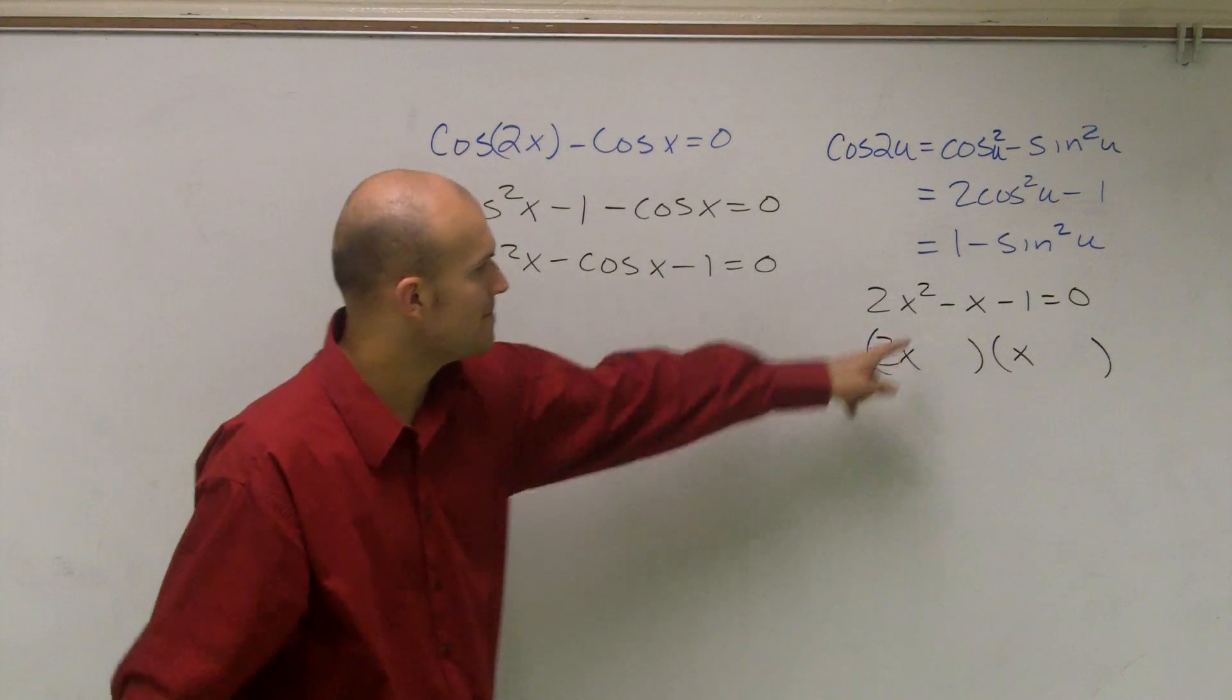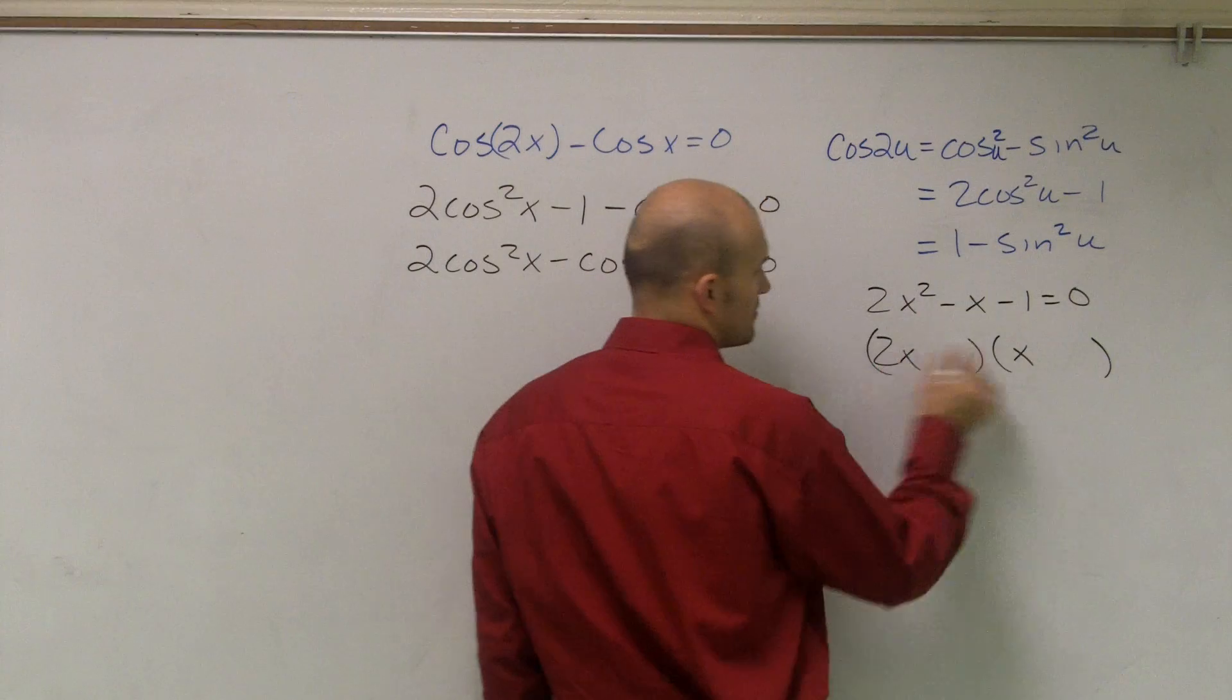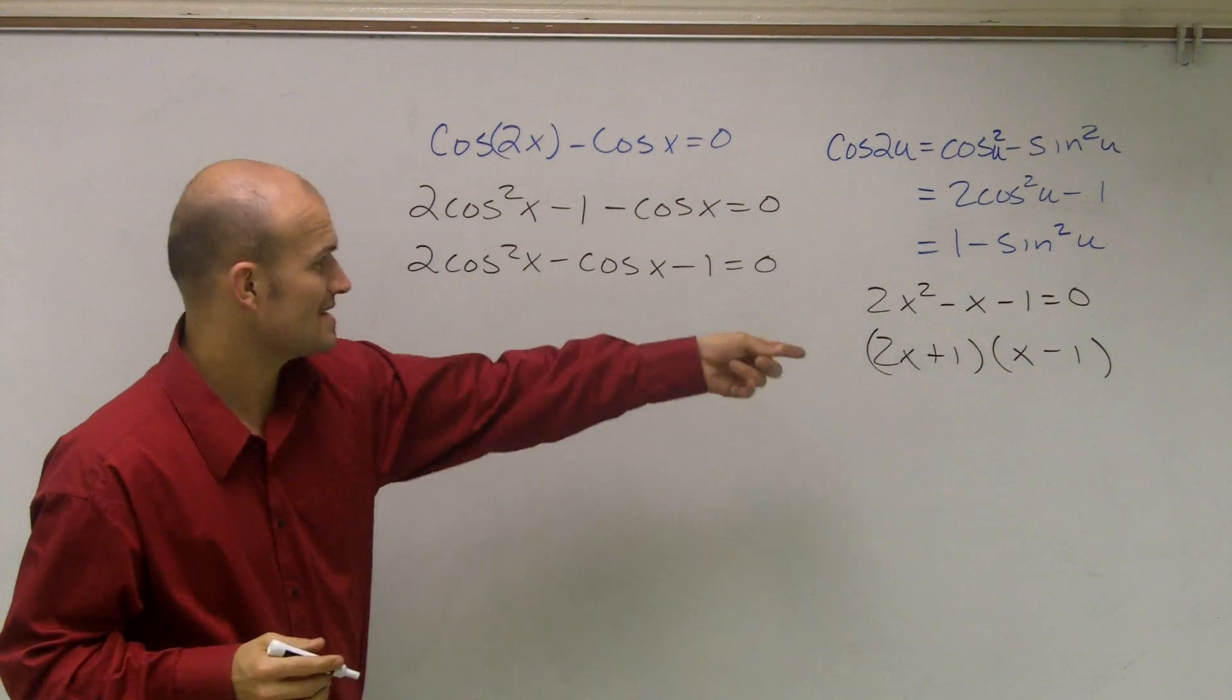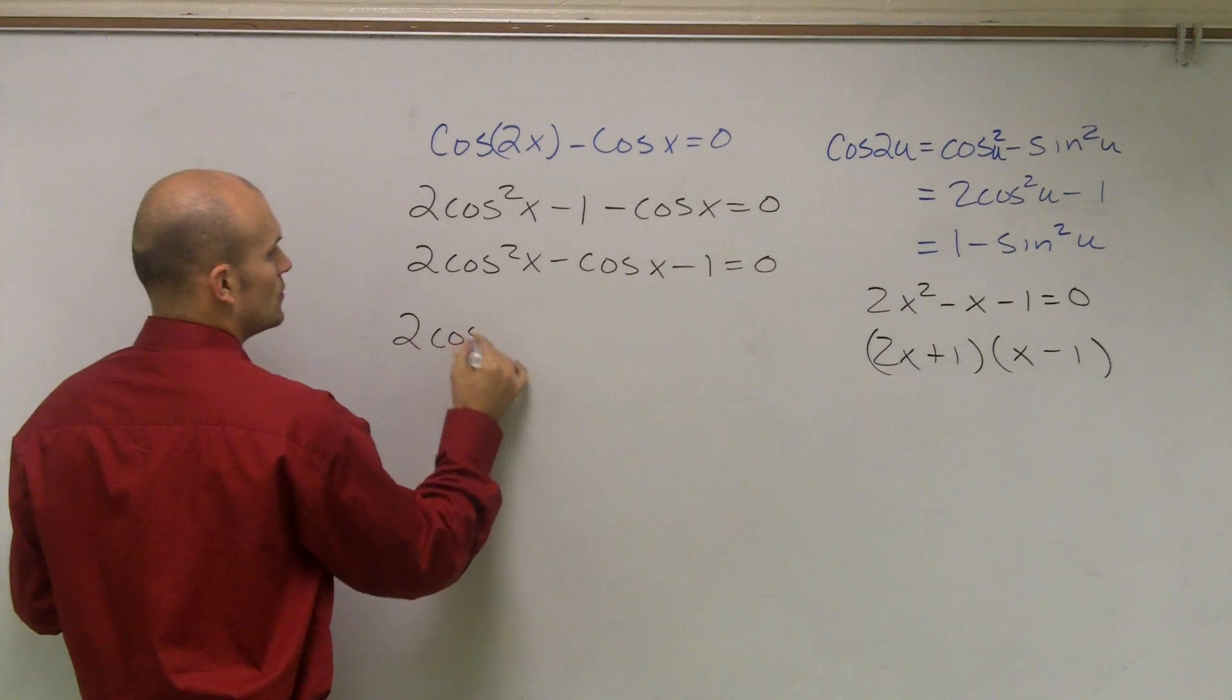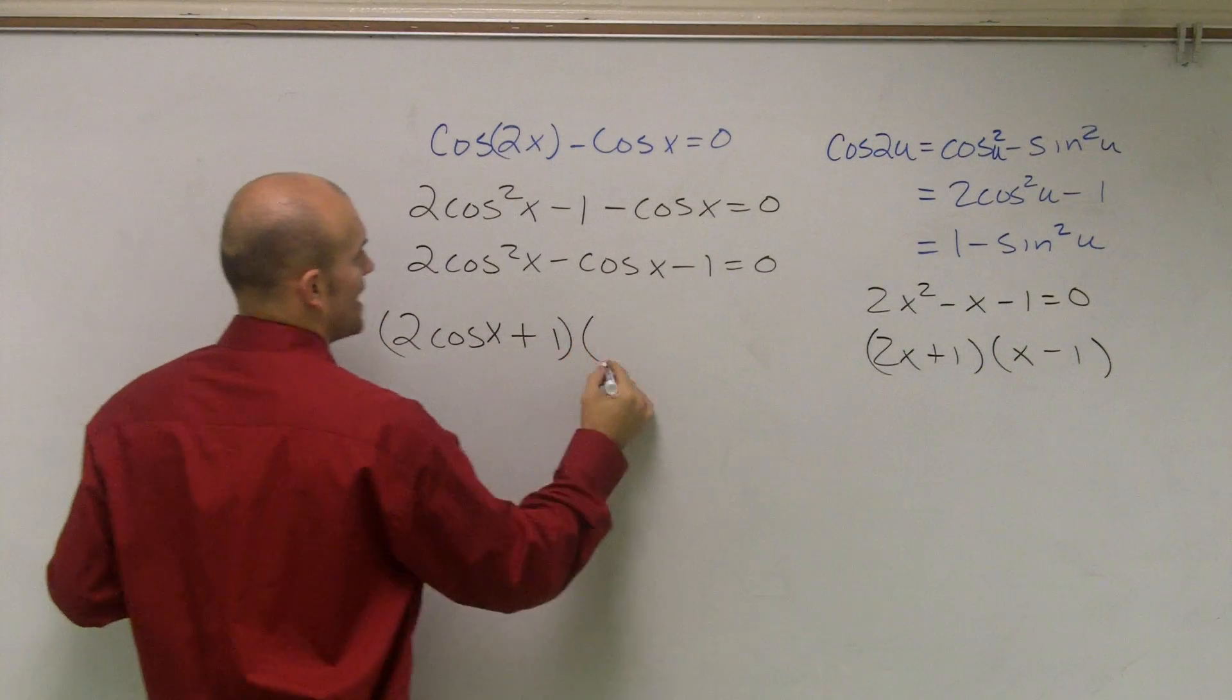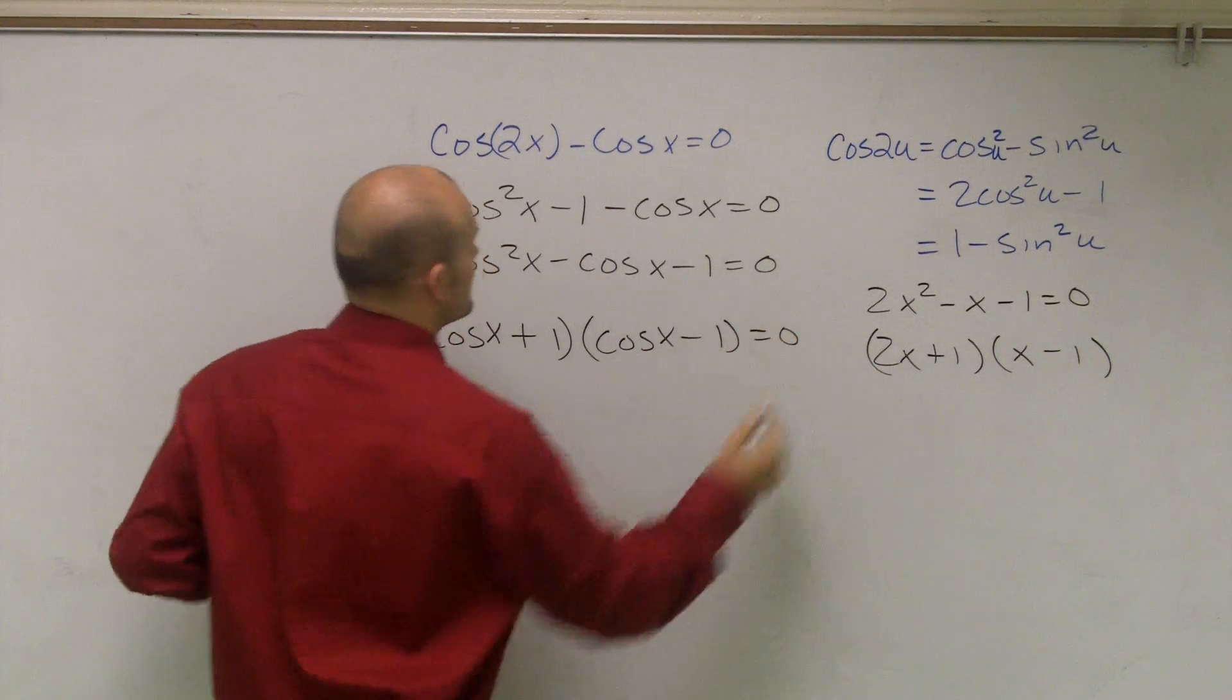And what I'll notice is since my middle term is going to be negative, I'm going to want to subtract, I'm going to want to multiply my 2 times a negative 1 plus 1. And then so what I notice is, is that factorable, does that work? Yeah, it does. So what I can do is I can rewrite this as 2 cosine of x plus 1 times cosine of x minus 1 equals 0.